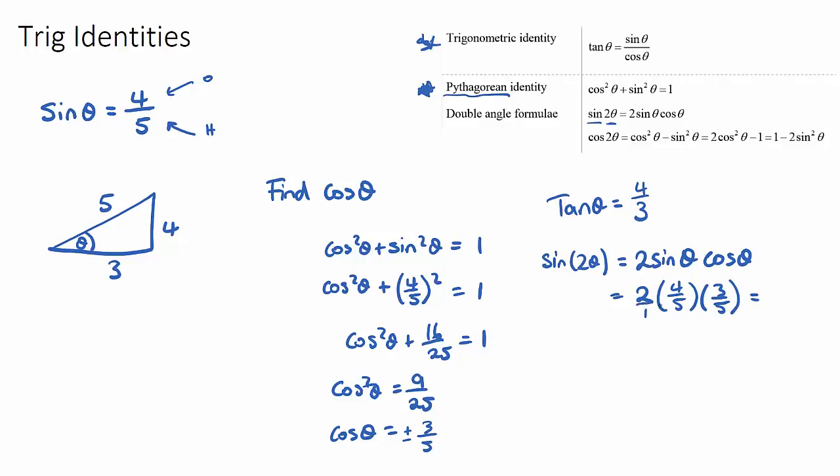And 2 is the same as 2/1. So if we multiply the tops, we're going to get 8 × 3 is 24/25. So it's a bit of an interesting answer, but sin(2θ) is 24/25.